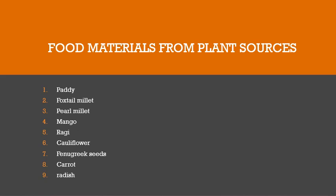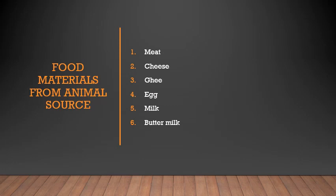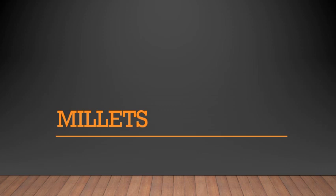There is an activity on page 113: classify the food materials given above. Food materials from plant sources — the correct answers are on your screen, please write them in your textbooks: paddy, foxtail millets, pearl millets, mango, ragi, cauliflower, fenugreek seeds, carrots, and radish. Food materials from animal sources: cheese, ghee, egg, milk, and buttermilk. Here is also a picture of foxtail millets and pearl millets which you might be hearing for the first time.